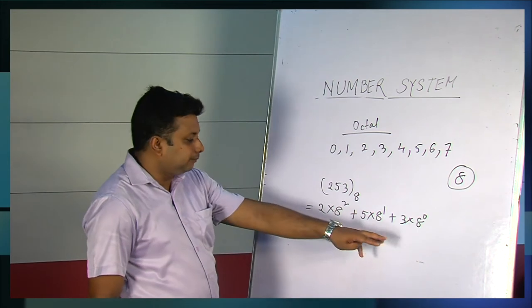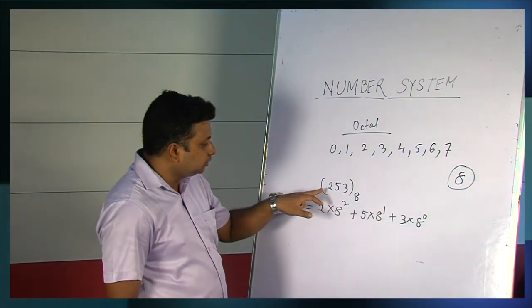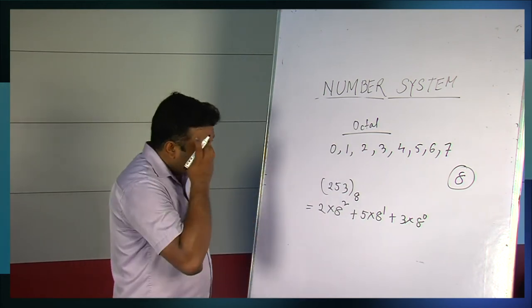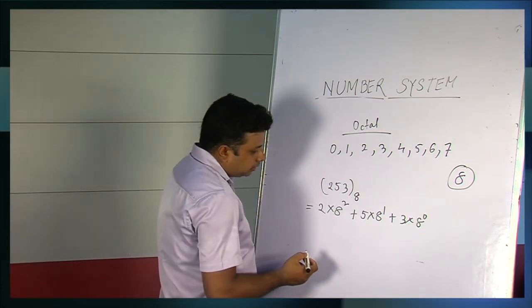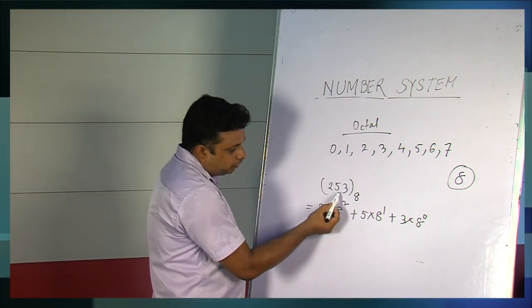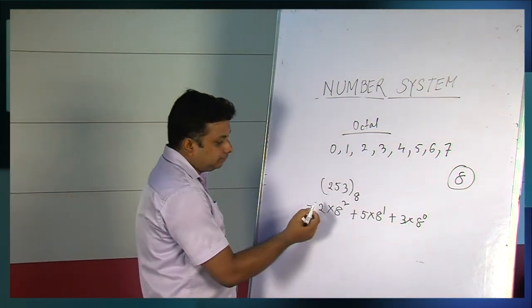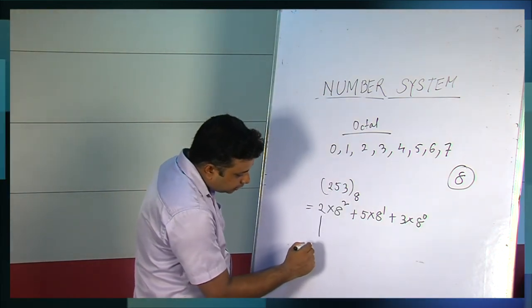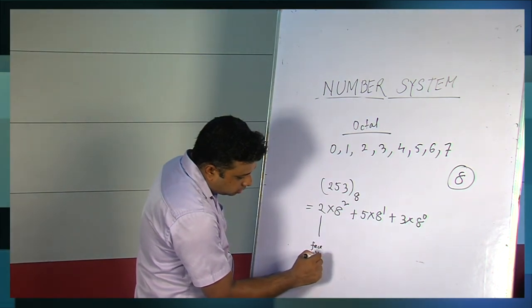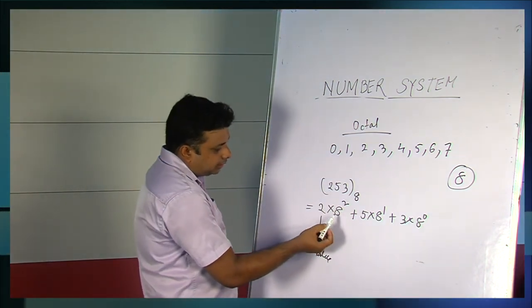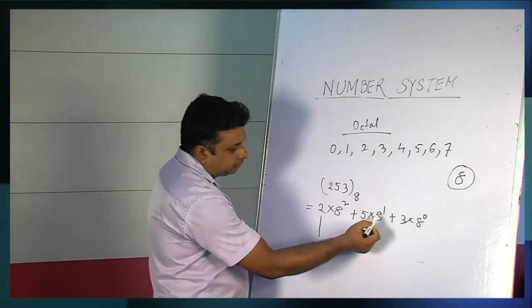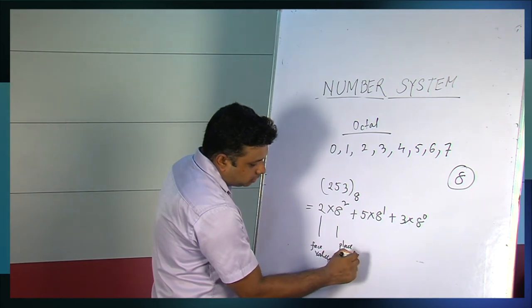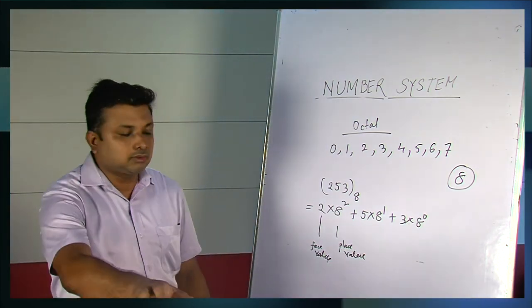And how we break them? This way we can break them. If we solve this, this will not remain 253. The result will come as decimal number. Now one important thing. In this number 253, it is applicable to the octal number system. Here the 2 is face value. And 8 squared or 8 to the power 1 or 8 to the power 0, whatever it is, this is known as place value. This is common to all.